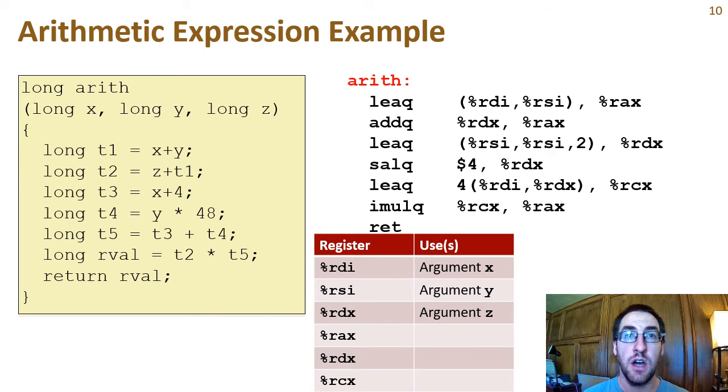When arith gets called, the x, y, and z arguments will be in the RDI, RSI, and RDX registers. The first line of assembly uses the LEAQ instruction to calculate x plus y and put the result in a third register, RAX. This doesn't use the ADDQ instruction because we don't want to overwrite either of the input arguments because we still need them later.